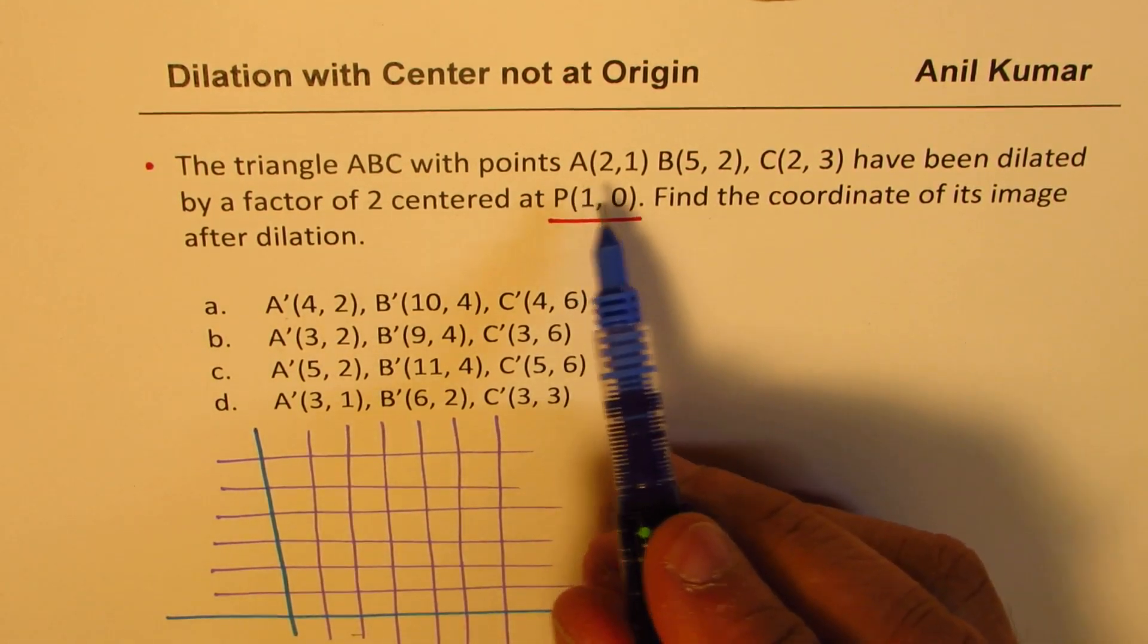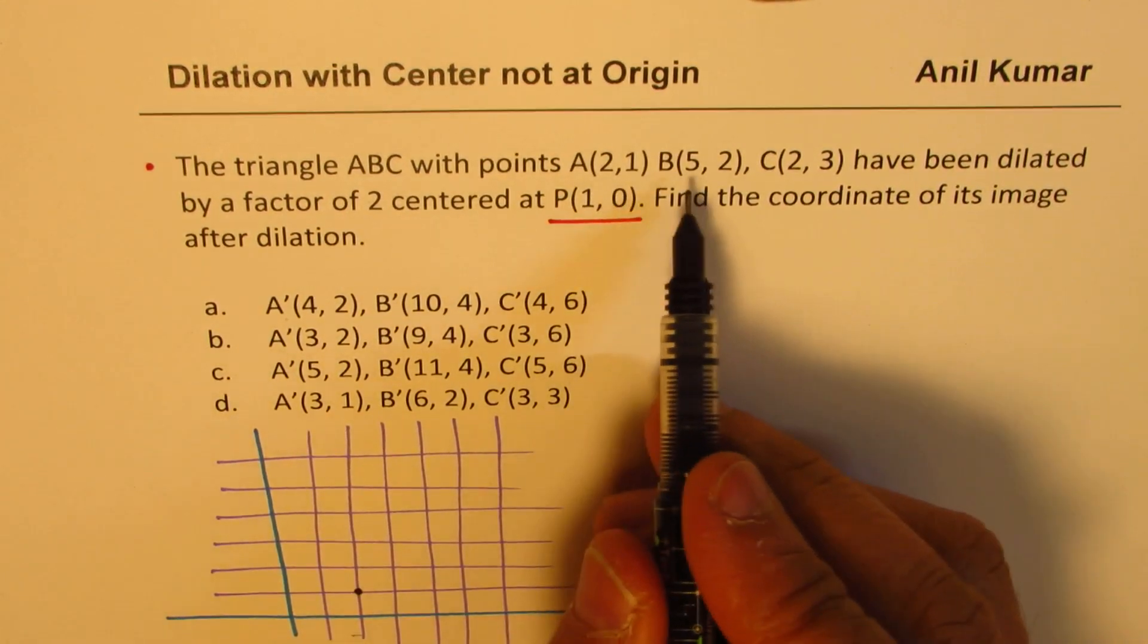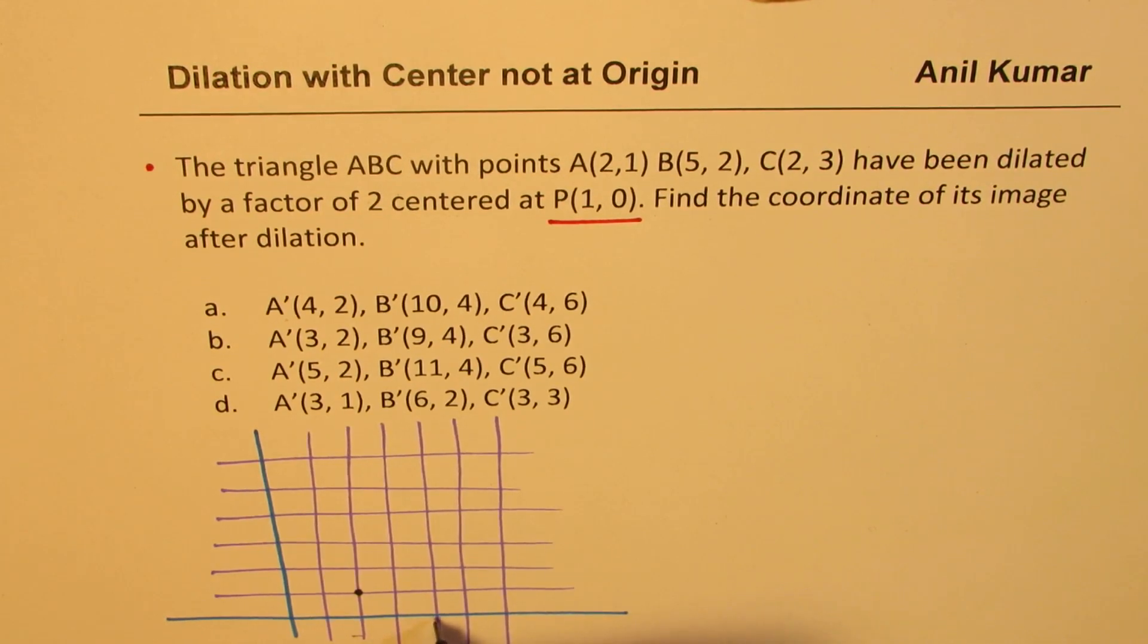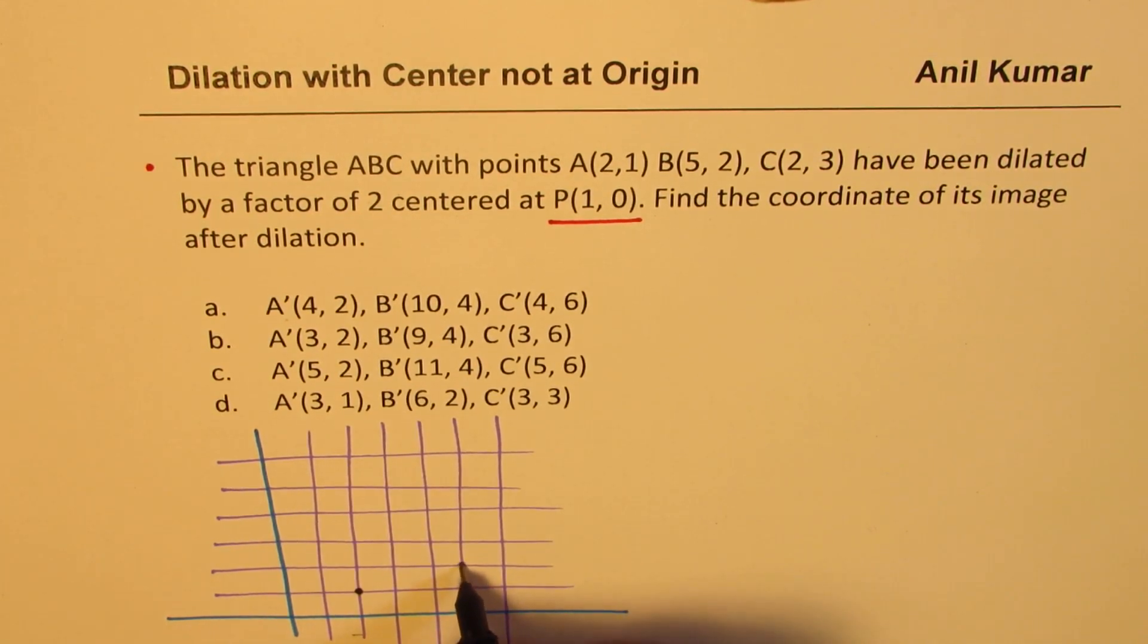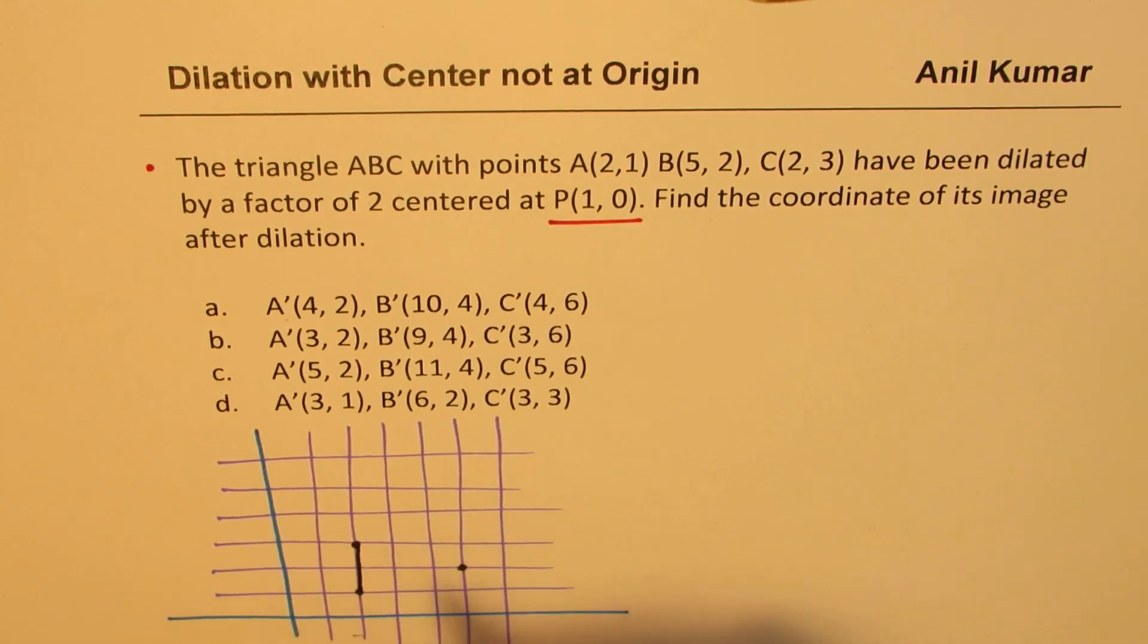So if I plot the points A, B and C on this particular graph which I just created. A is (2,1). So that is say A is this point. B is (5,2). So 2, 3, 4, 5 and then 2. And C is at (2,3). So 2, 1, 2, 3. So that makes, that gives you a triangle kind of a thing.